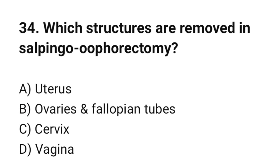Question number 34. Which structures are removed in salpingo-oophorectomy? The correct option is B: Ovaries and fallopian tubes.